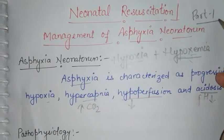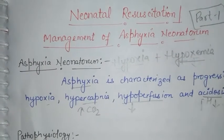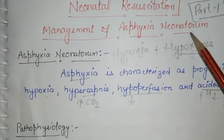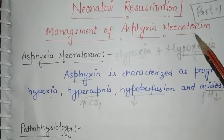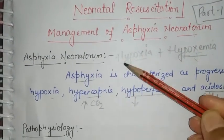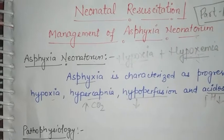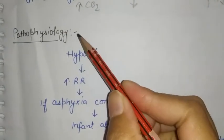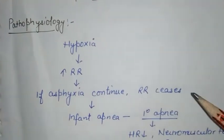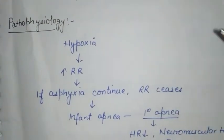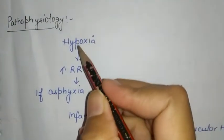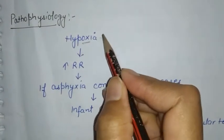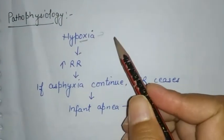For neonatal resuscitation there will be two parts. In part one we will discuss what is asphyxia neonatorum, the pathophysiology, and the equipment required. In part two we will discuss the management.